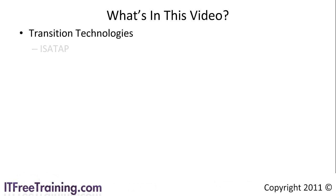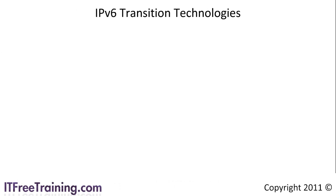The first of these is ISATAP. ISATAP is used inside a private network. If you are planning to access the internet you can use a system like 6to4. 6to4 is a transition protocol designed to help people migrate to IP version 6. The last transition protocol I will look at is Teredo. Teredo is used when your company is using a NAT device. The protocol relies on external servers which many ISPs and even Microsoft have placed on the internet to help with the transition.